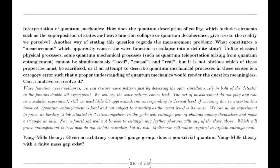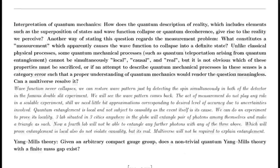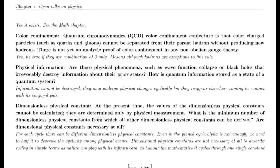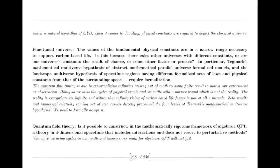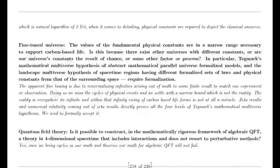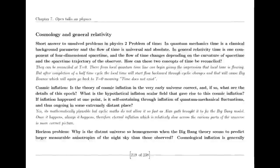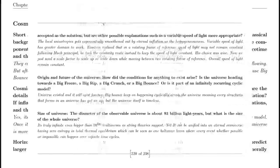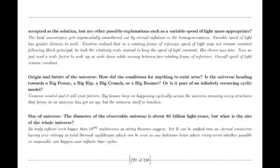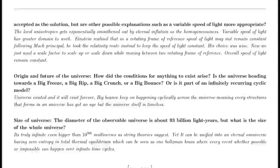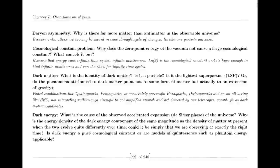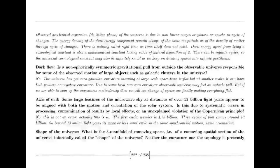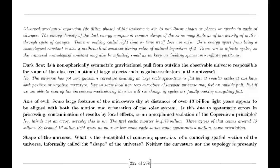Zermelo-Fraenkel set theory starts with a null set and keeps building more sets as the number of elements increases. Even a null set gets a count — something out of nothing. Philosophically, zero represents the concept of nothingness, the absence of any quantity. Zero is unique in that it bridges the finite and the infinite, the tangible and the abstract. My original inspiration was symmetry; we will be moving towards that direction.